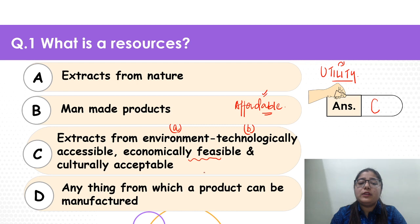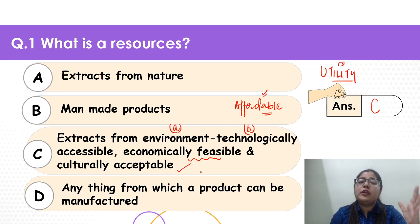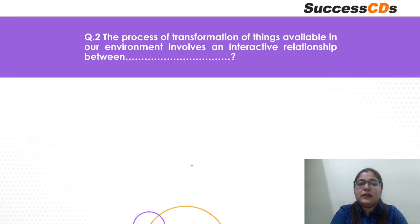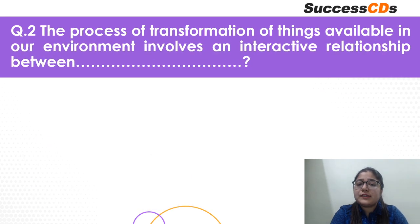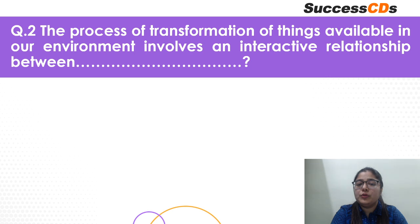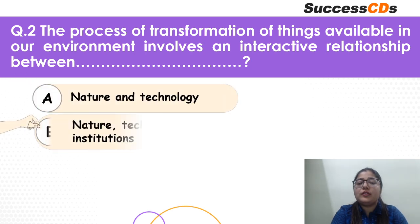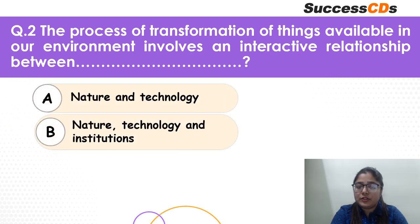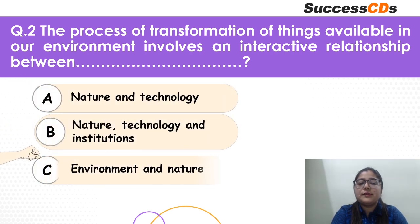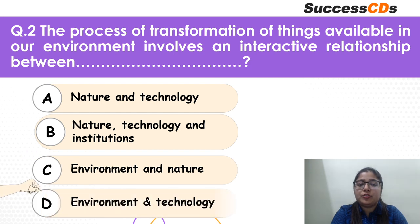It should be economically feasible and also culturally acceptable in order to classify as a resource. So C is the correct answer. Let's move to question 2. The process of transformation of things available in our environment involves an interactive relationship between whom? Is it nature and technology? Is it nature, technology and institutions? Is it environment and nature? Or is it environment and technology?